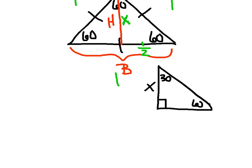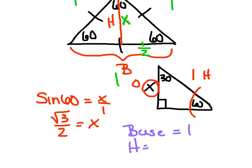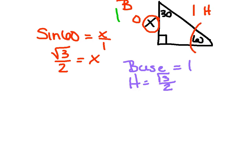I'm going to write a trig function to solve for X. I want the opposite side and I have the hypotenuse, so the sine of 60 equals X over 1. The sine of 60 is radical 3 over 2, so that height is radical 3 over 2. This implies that when the base is 1, the height is radical 3 over 2. So I can use that ratio, and for equilateral triangles the key is: height equals radical 3 over 2 times the base.